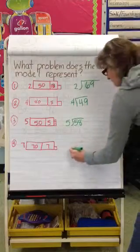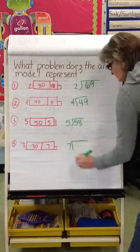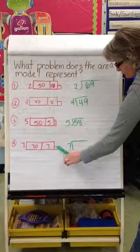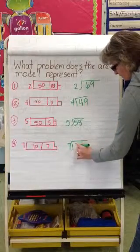Last one. Divisor is 7, the dividend is 70 plus 7 plus 1 remaining is 78.